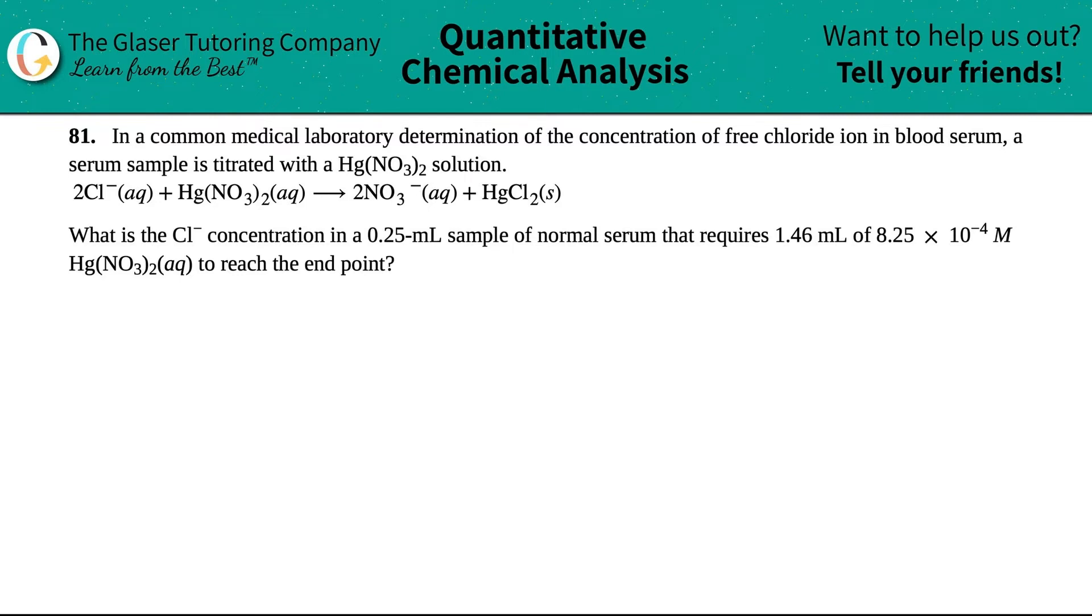Number 81. In a common medical laboratory determination of the concentration of free chloride ion in blood serum, a serum sample is titrated with Hg(NO₃)₂ solution, given the following formula.